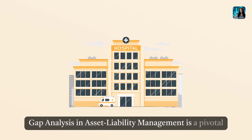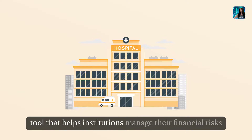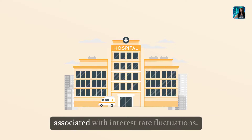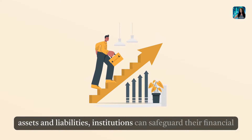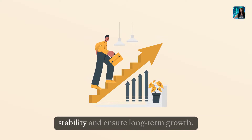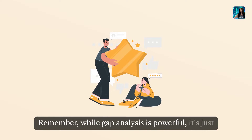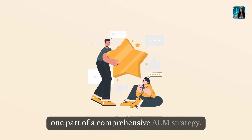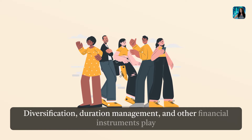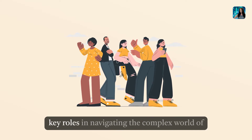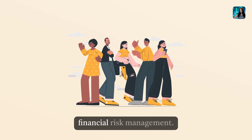Conclusion. Gap analysis in Asset Liability Management is a pivotal tool that helps institutions manage their financial risks associated with interest rate fluctuations. By carefully analyzing and adjusting the gap between assets and liabilities, institutions can safeguard their financial stability and ensure long-term growth. While gap analysis is powerful, it's just one part of a comprehensive ALM strategy. Diversification, duration management, and other financial instruments play key roles in navigating the complex world of financial risk management.